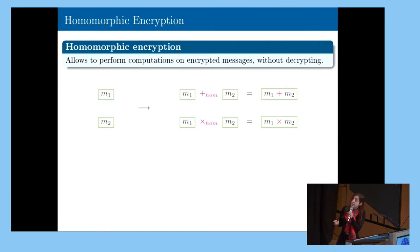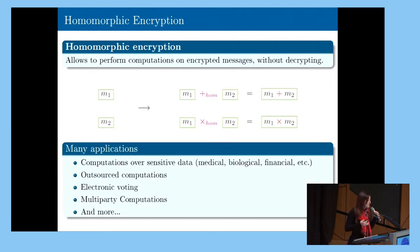Homomorphic encryption is very interesting, mainly because of the large amount of applications it can solve. We can think about electronic voting or any kind of operation on sensitive data, such as medical data, genomic data, financial data, etc.